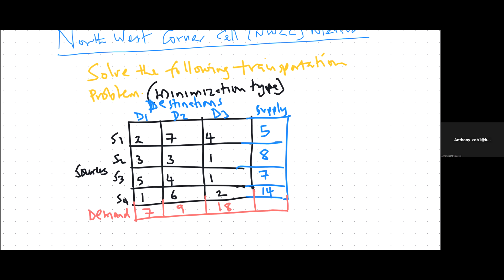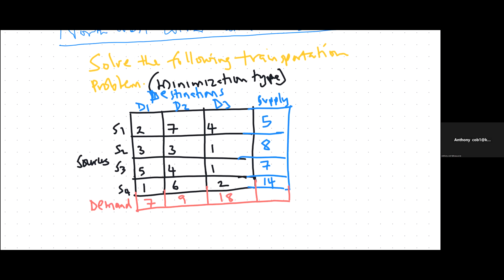When you get a data matrix like this one, we have the sources. In this problem, we have four sources, and then we have three destinations. For every source, we have its supply capacity. Source one is able to supply five units of the product. Source two is able to supply eight units. Source three is able to supply seven units, and so on. The destinations have their demand: destination one has a demand for seven units, destination two has a demand for nine units, and destination three has a demand of 18 units.